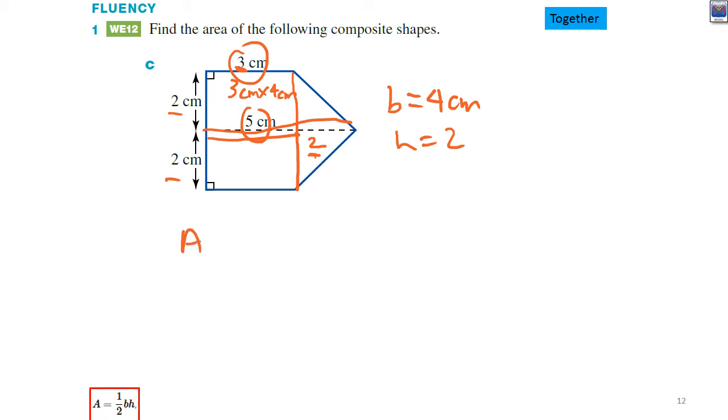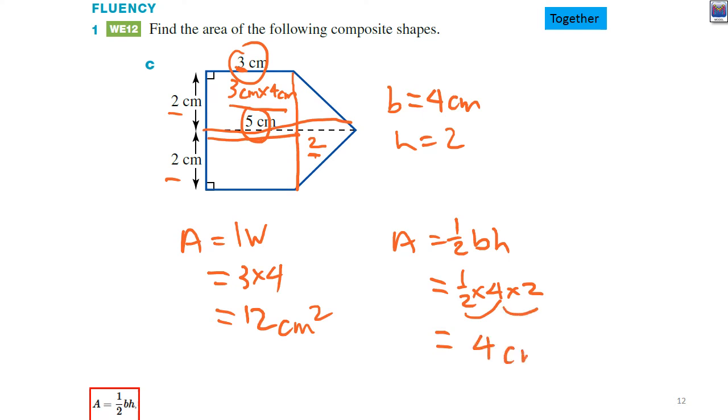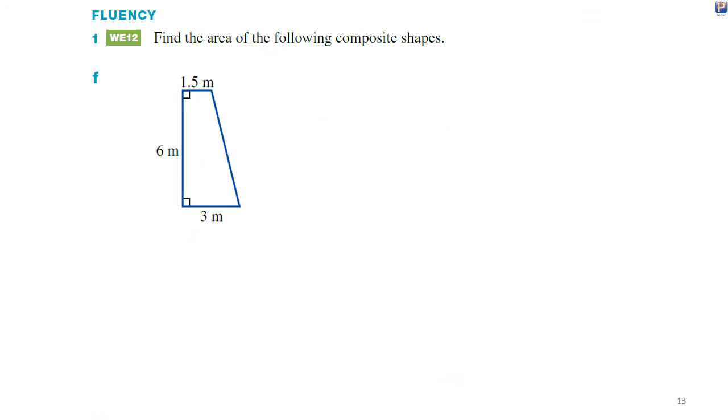So I can work out the area of the rectangle. My rectangle is 3 times 4, 12 square centimeters. The area of the triangle formula. 4 times 2. How do we work this out? A half of 4 is 2. So that's 4 divided by 2 is 2. 2 times 2 is 4. Total area, 12 plus 4 equals 16 square centimeters. And do the same with these.